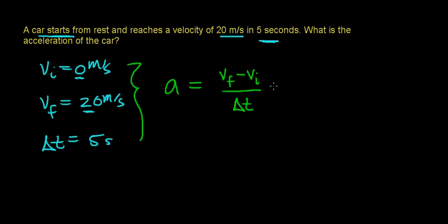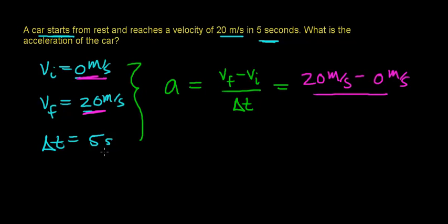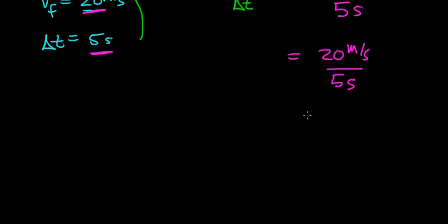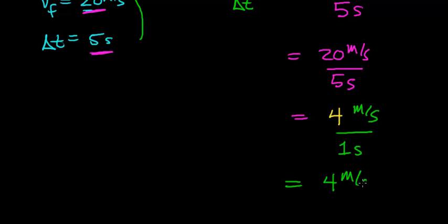So in this case, the final velocity is 20 meters per second, minus the initial velocity of 0 meters per second, divided by the time of 5 seconds. That gives us 20 meters per second minus 0, which is 20 meters per second, divided by 5 seconds. Dividing the coefficients, 20 divided by 5 equals 4, and the units are meters per second per second — so the acceleration is 4 meters per second squared.